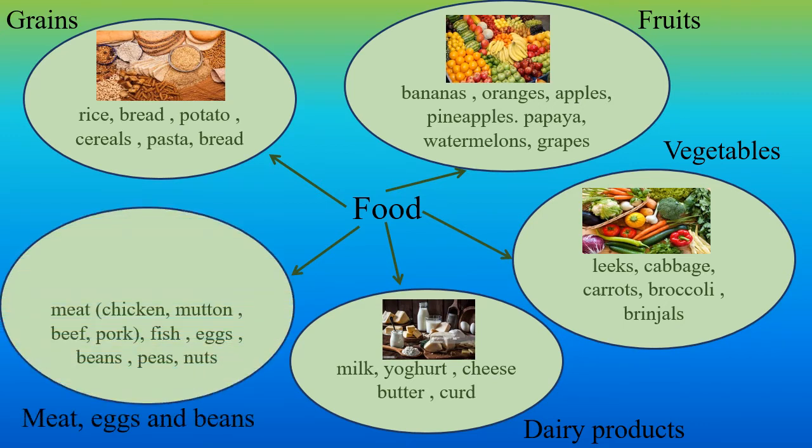Meat, eggs and beans. When you take meat there are different types: chicken, mutton, beef, and pork. Then fish, eggs, beans, peas, and nuts.